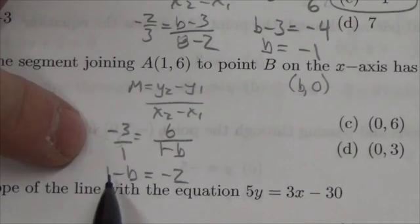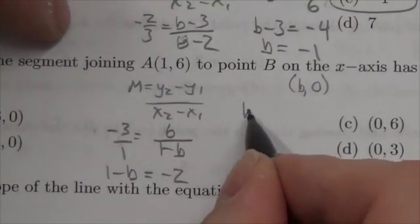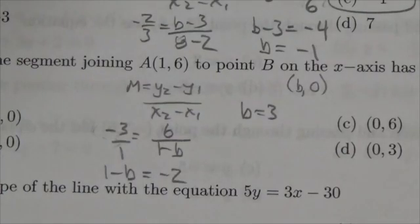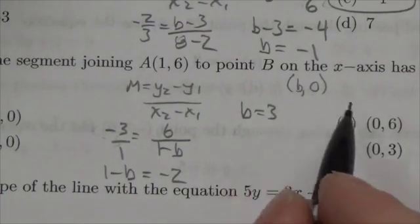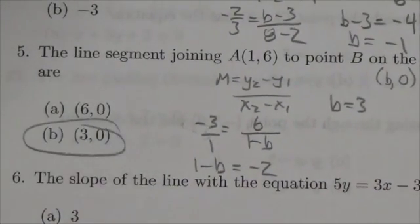So bring the B over, bring that over, and we're going to get here that B is equal to 3, which means that the point here is going to have to be the point 3 comma 0. So once again, the answer is B here.